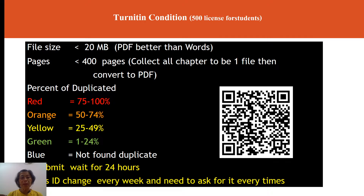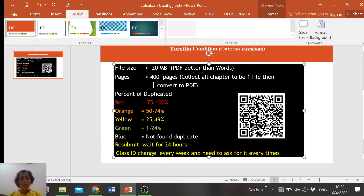The duplicate percent must not be more than 25%. If you need to resubmit, you must wait 24 hours. The class password changes every week, so you must ask for it every time you want to use Turnitin.